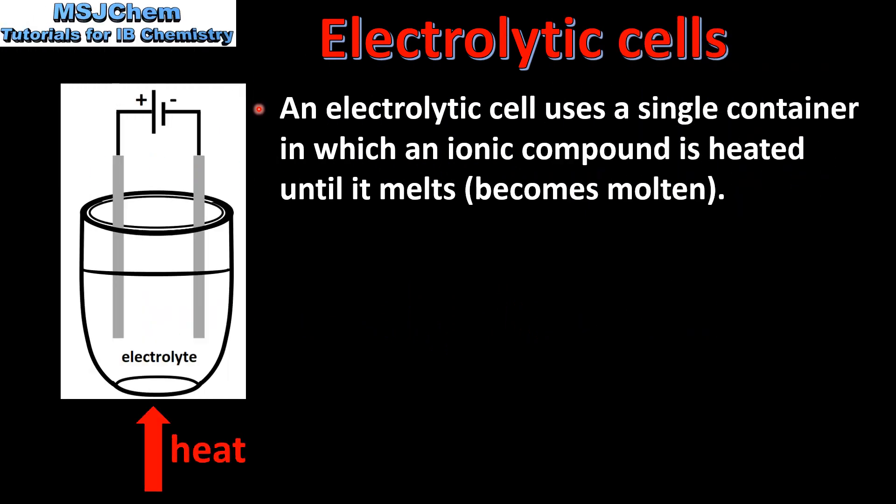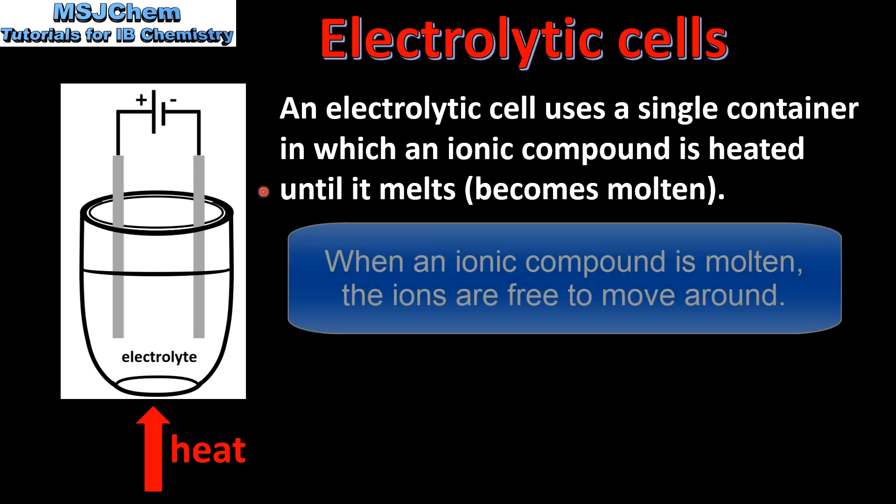An electrolytic cell uses a single container in which an ionic compound is heated until it melts, becomes molten. Here we have an electrolytic cell which is heated until the ionic compound becomes molten, which is then called the electrolyte.